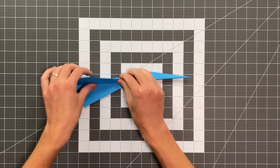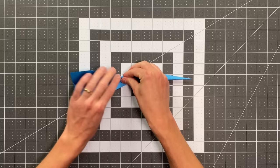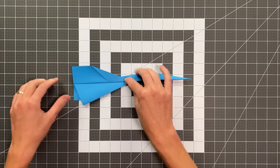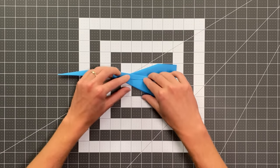And fold your wing up right along this edge. Flip it over. Do the same thing on this side.